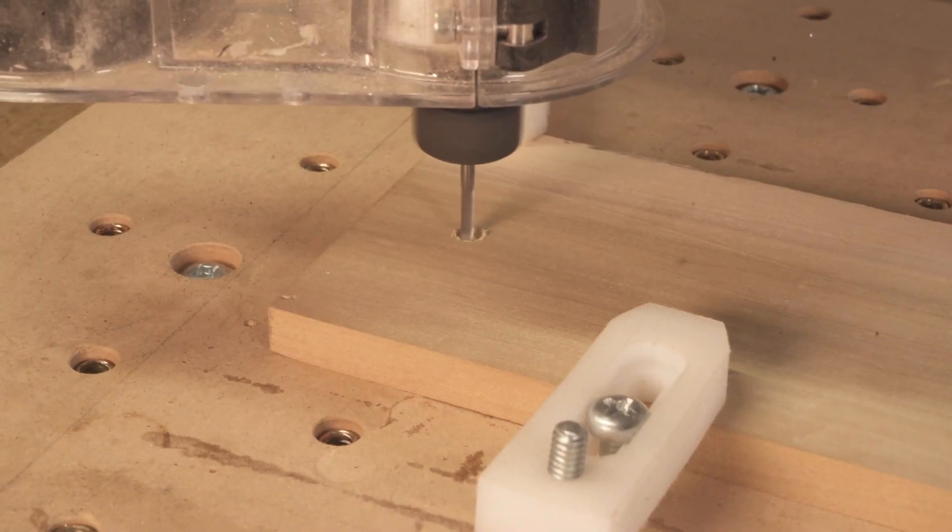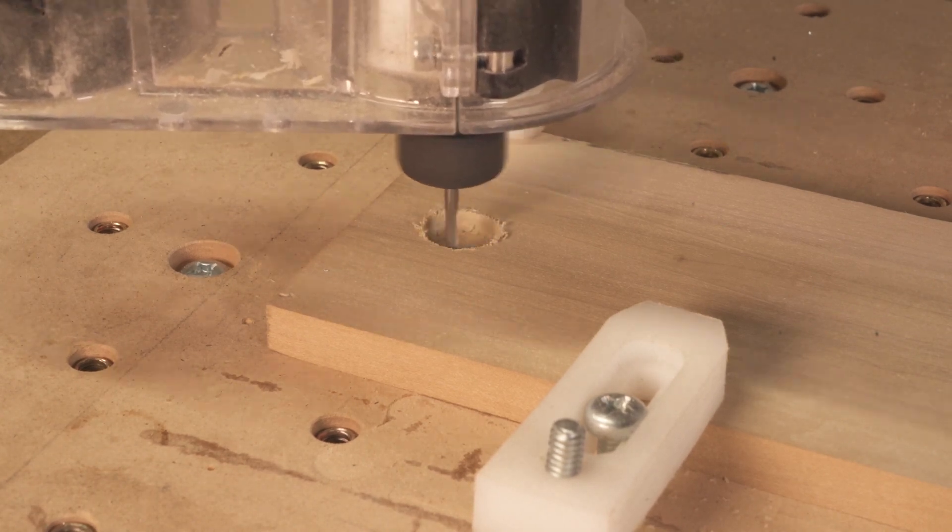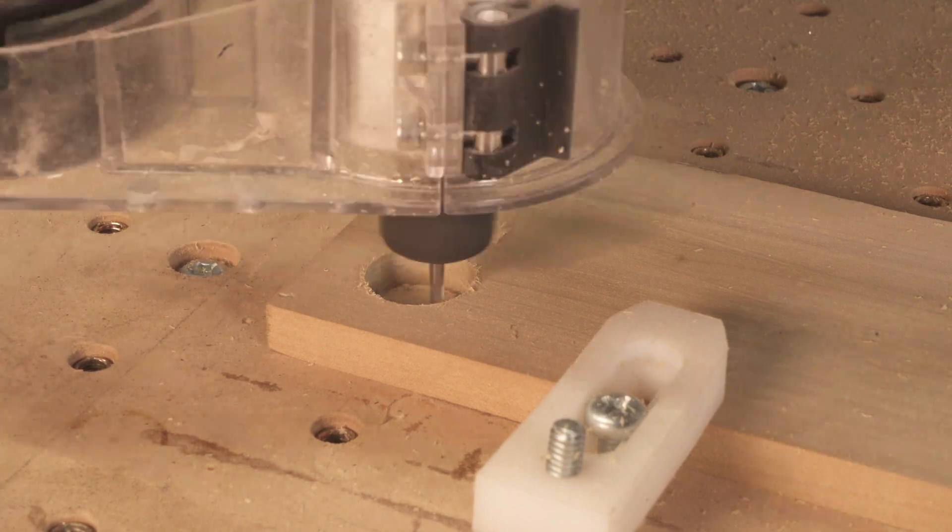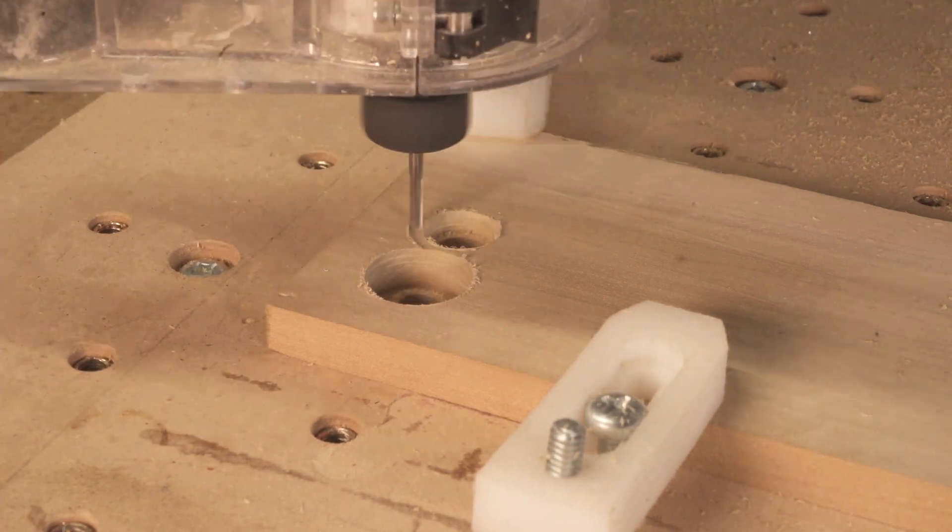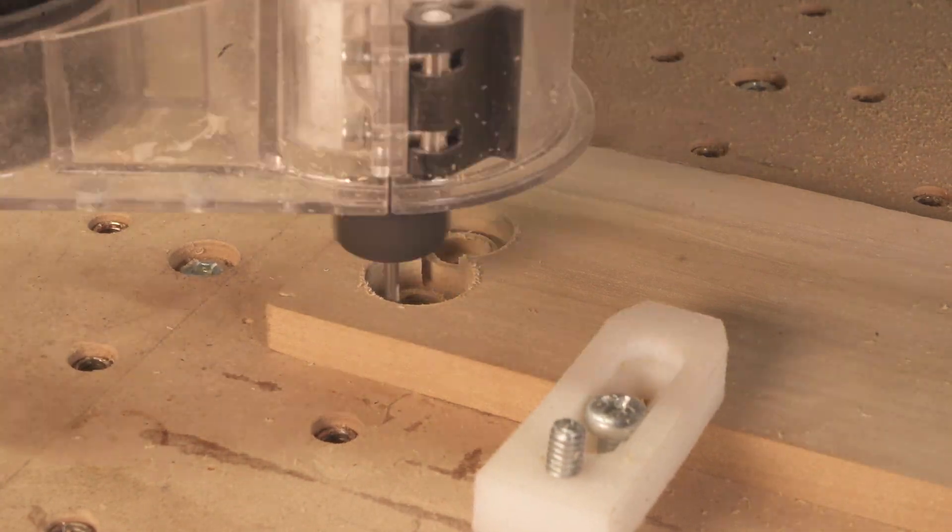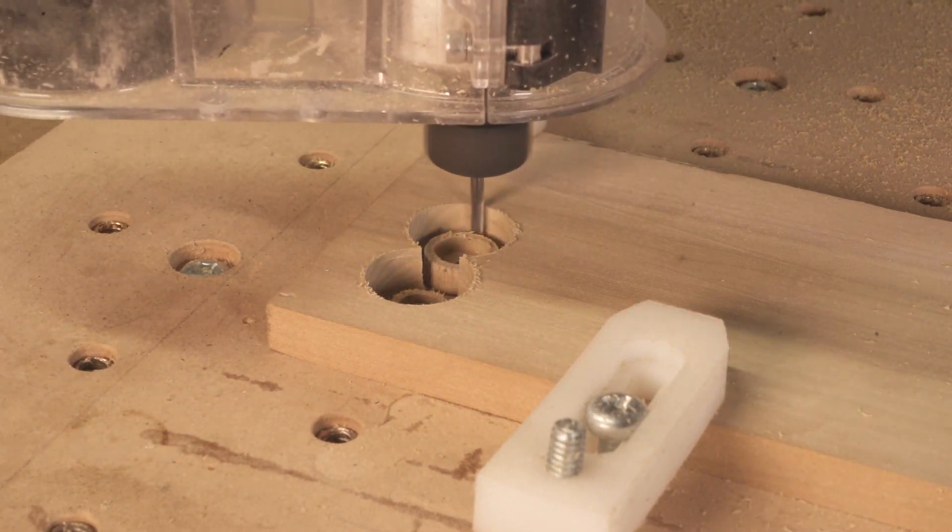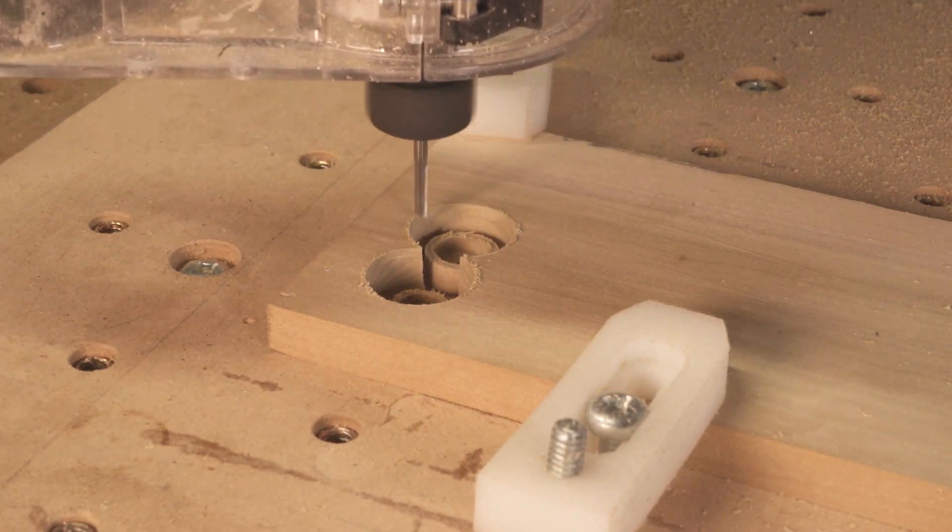After that, I started cutting out the button and button cover from a piece of poplar wood that I had. Unfortunately, the only piece I had was thicker than I needed, so I had to mill down pretty far before getting to a usable thickness. But altogether those parts went pretty smoothly.